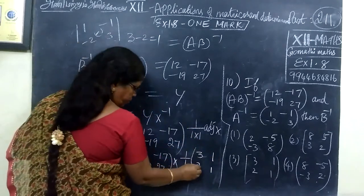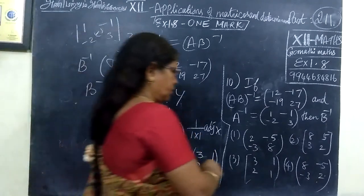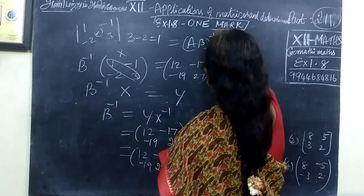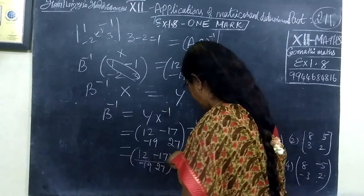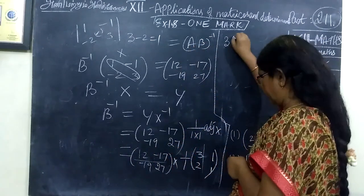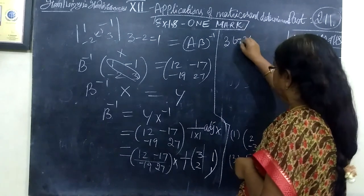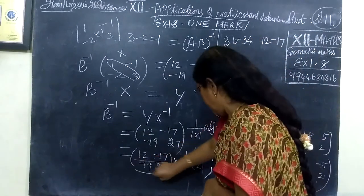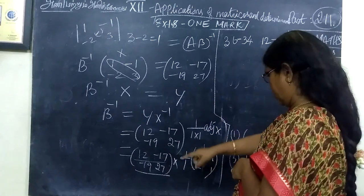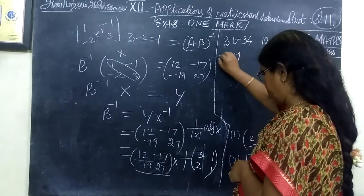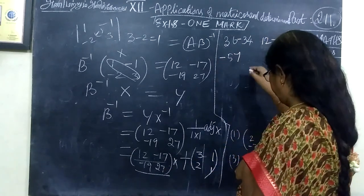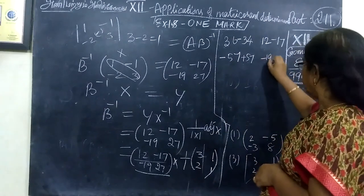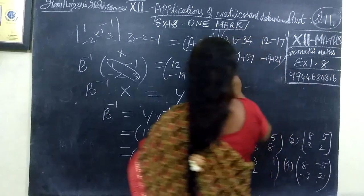Now just multiplication, matrix multiplication. So here first row first column: 36 minus 34. First row second column: 12 minus 17. Then second row first column here: 57 minus 57, multiply plus 57. Second column: minus 19 plus 27.